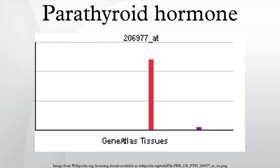Regulation of serum phosphate: PTH reduces the reabsorption of phosphate from the proximal tubule of the kidney, which means more phosphate is excreted through the urine. However, PTH enhances the uptake of phosphate from the intestine and bones into the blood. In the bone, slightly more calcium than phosphate is released from the breakdown of bone. The end result of PTH releases a small net drop in the serum concentration of phosphate.